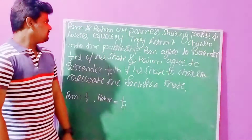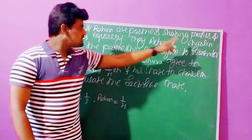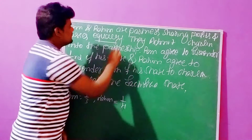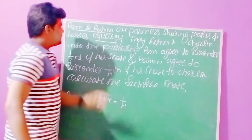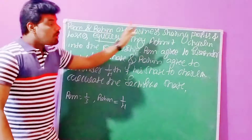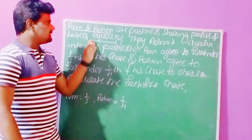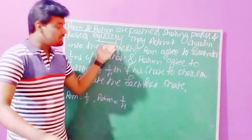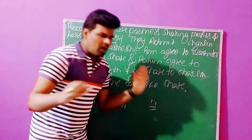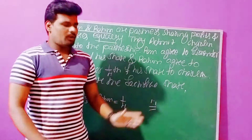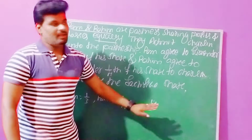Now observe the question. Ram and Rahim are partners sharing profits and losses equally — that is, in the ratio of 1 is to 1, meaning 1 by 2 each. Whatever profit in the business, they are distributing on the basis of equal proportions.